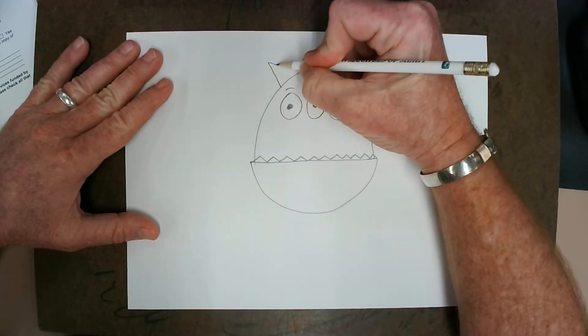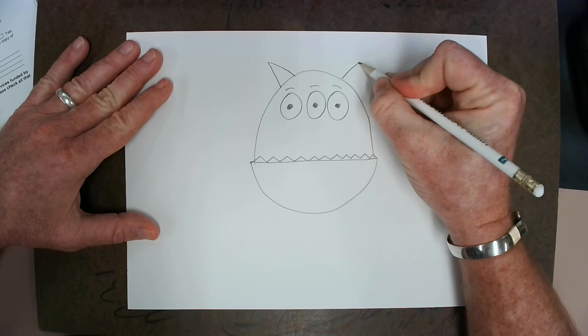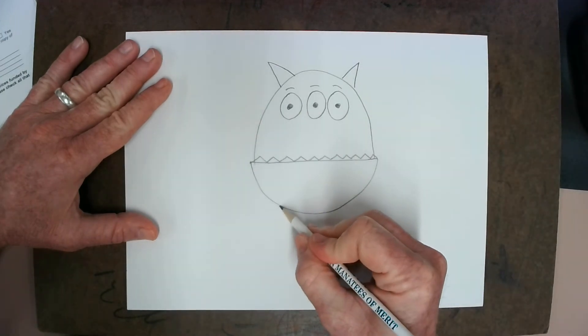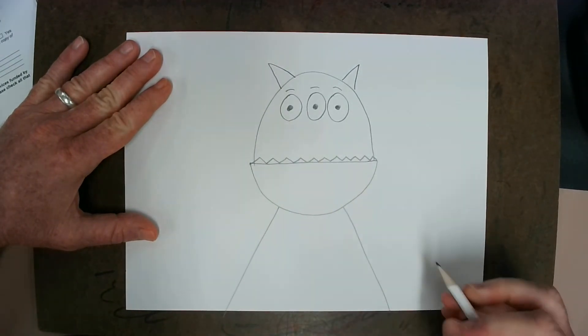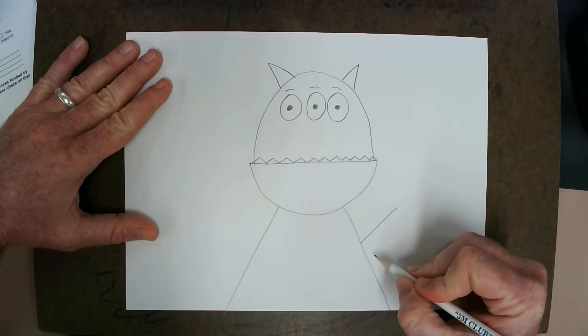Well, I guess with three eyes, we need three eyebrows. And we can put some little horns on our guy with a zigzag line. I'm going to put a straight line here and one here. And I'll put two straight lines here.